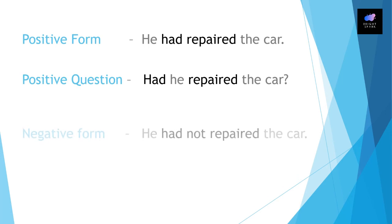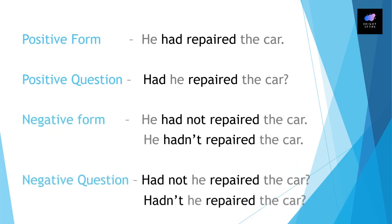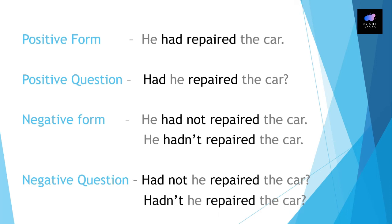He had repaired the car — that is the positive form. Positive question: Had he repaired the car? Yes, he had repaired the car. Negative form: He had not repaired the car. The contracted form is used here — had not becomes hadn't, with the letter O omitted. Negative question: Hadn't he repaired the car? Here hadn't means had not.